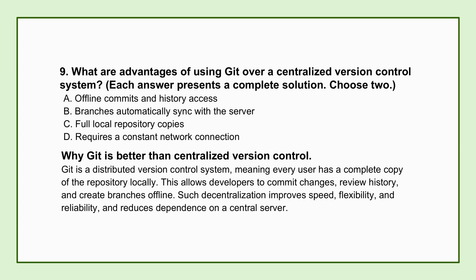Let's zoom out to the absolute foundation of GitHub — Git itself. What are the core advantages of using Git, this distributed version control system, compared to older, more centralized systems? The main advantages are pretty profound: Git enables offline commits and history access, and it provides every user with their own full local copy of the repository — not just checking out files from a central server. In a centralized system, you're tethered to that single server; if it goes down or you're offline, you're stuck. With Git, because it's distributed, every developer has the project's entire history right on their local machine. You can commit changes, look through history, create branches, and merge — all completely offline. It drastically improves speed, reliability, and allows for incredibly flexible branching and merging strategies central to how modern development works.